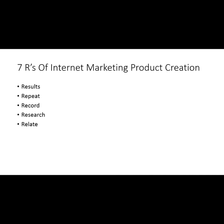Relevance: your product should really touch on something people are actually doing. It shouldn't be obscure — it should be directly relatable. If you're doing a method about blogging, make sure it gets them results in blogging. Find an area where you're getting results that are relevant to people who want to make money online. You can have results in any area, but if people aren't interested in them, you won't have a successful information product.